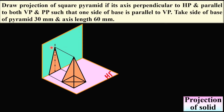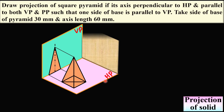You have to imagine this drawing in your mind. It is not required to draw in the examination, but with respect to the horizontal plane and vertical plane, you can imagine the square pyramid like this in your mind, because here it is given that the square pyramid has its axis perpendicular to HP. So here you can see the axis is perpendicular to HP. This is the profile plane, because the axis is perpendicular to HP as well as parallel to both VP and PP.